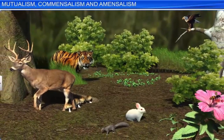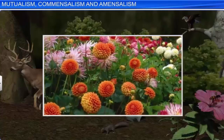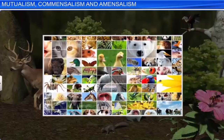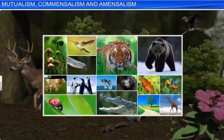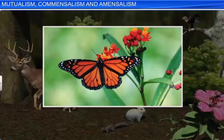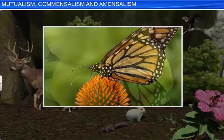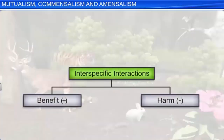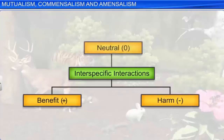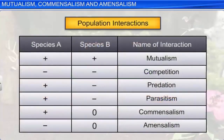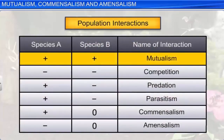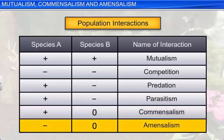In every habitat, microbes, plants, and animals interact in various ways to form a community. When populations of two different species interact, it leads to interspecific interactions. Such interactions may benefit, harm, or have a neutral effect on one or both species. In mutualism, both species benefit from interaction. While in commensalism, the interspecific interaction is beneficial to one species and neutral to the other. In the case of amensalism, one species is harmed and the other remains unaffected. Let's begin with mutualism.